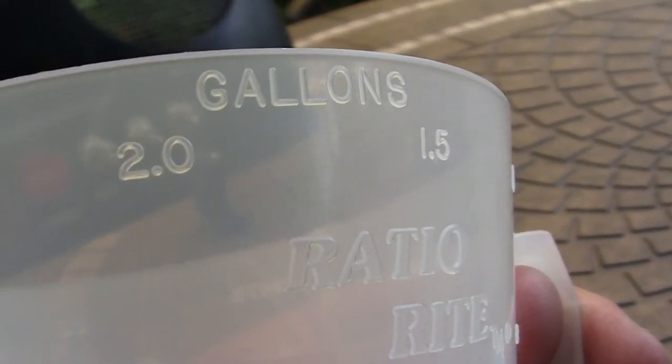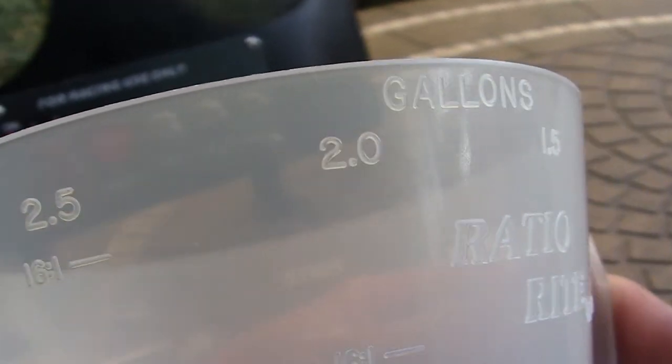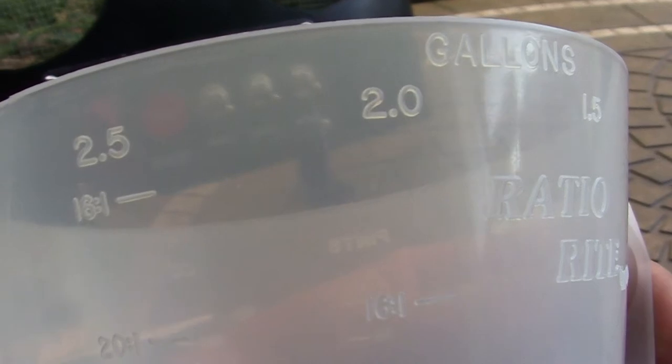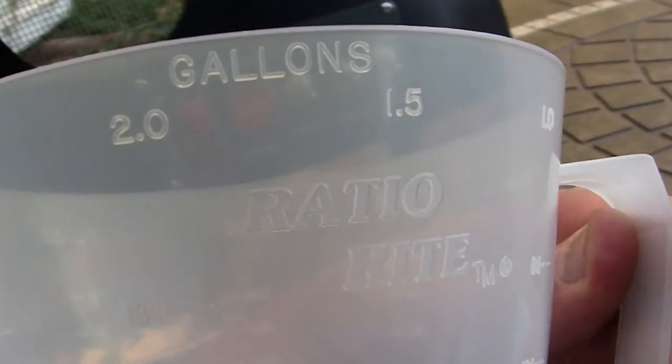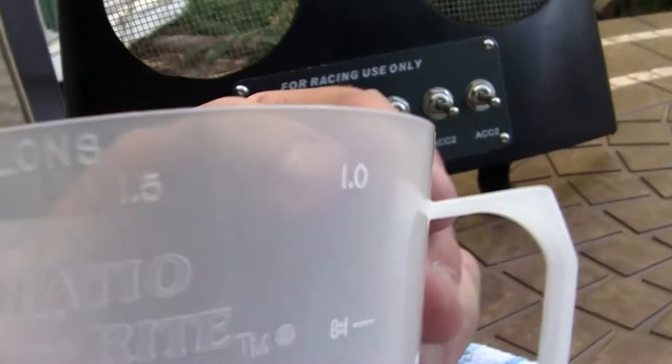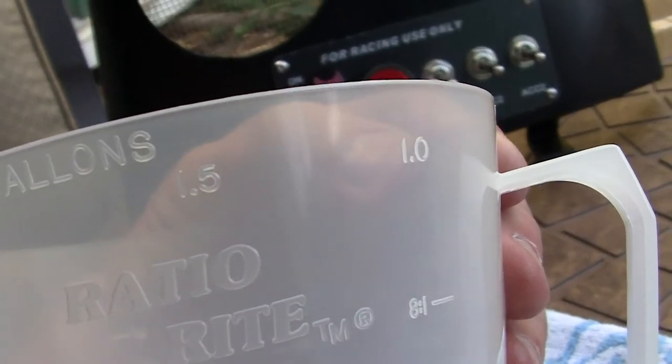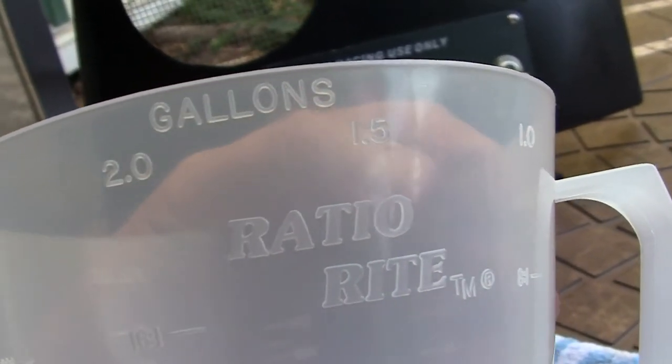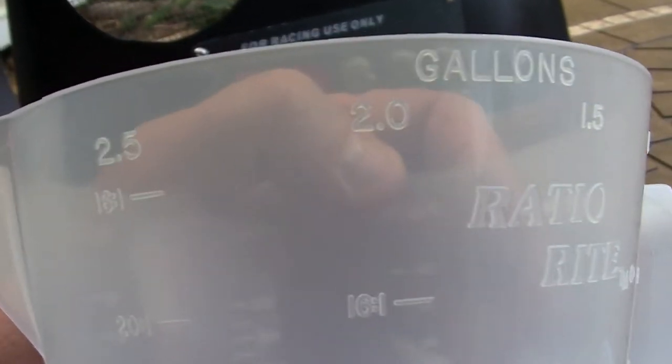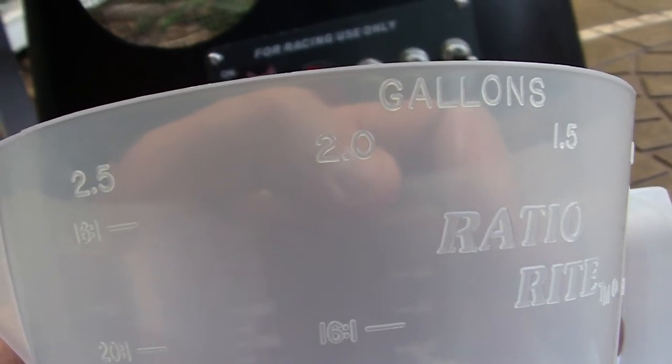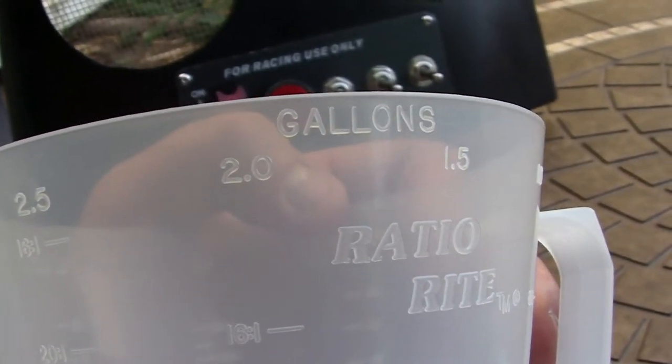You have gallons on one side: 2.5, 2.0, which is a popular one, 1.5, or one gallon. Usually with the RatioRite, we mix up to probably two gallons at a time, or you can mix up to five gallons, depends on how big a bike you got.